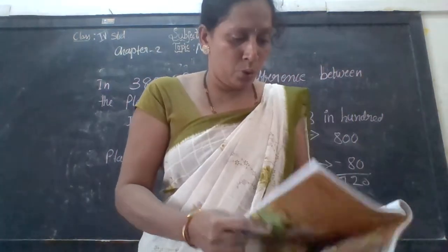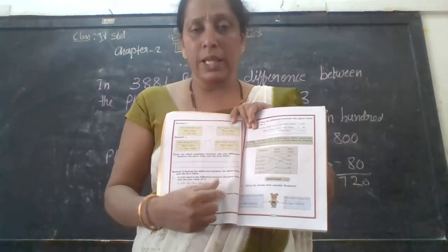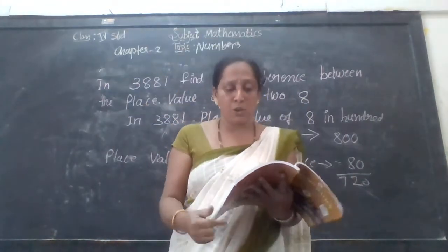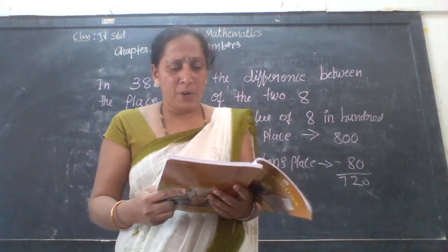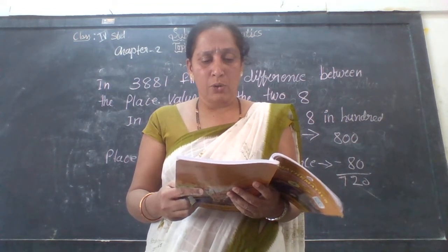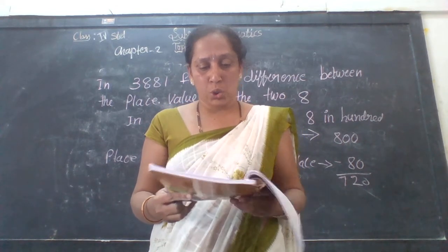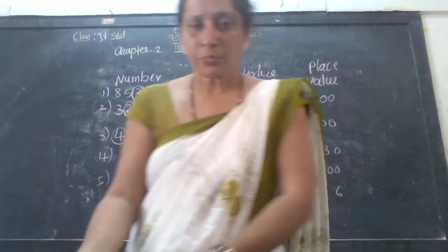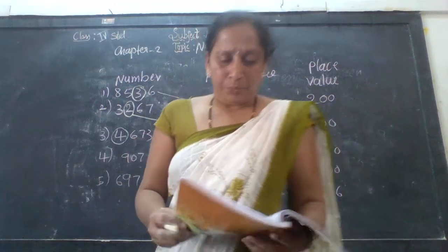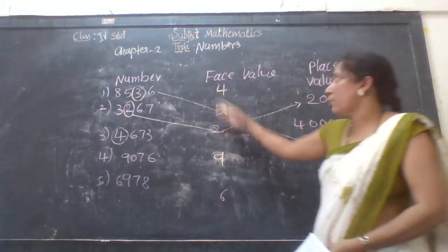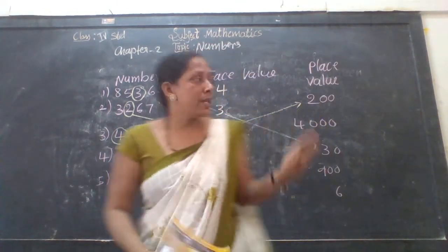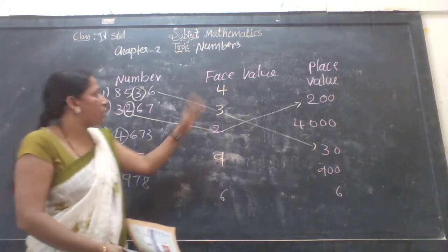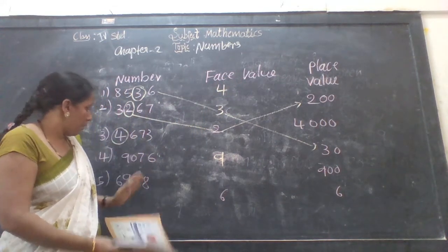Did you understand? You have to do all the exercises in your textbook and notebook and submit them. Next, for each number given below, match the place value of the circled digit as shown in the example.